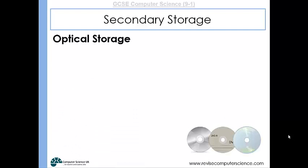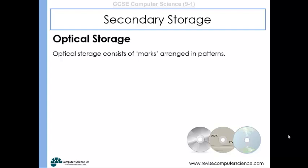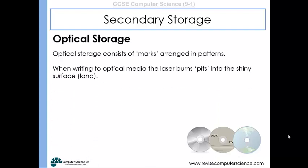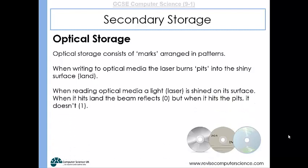Optical storage uses light lasers to burn pits into the material of the disc, and the different arrangements of these marks give us our data. When writing to optical media, the laser burns pits into the land — the shiny part of the CD or DVD. When reading, the laser shines light onto the surface: if it reflects back perfectly, it's hit land and that's read as a 0; when it hits a pit, it doesn't reflect back the same way and represents a 1. The different arrangements of pits and lands give us our data.